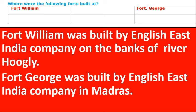The next topic: where were the following forts built? Fort William was built by the English East India Company on the banks of the river Hooghly in West Bengal. Fort St. George was built by the English East India Company in Madras.